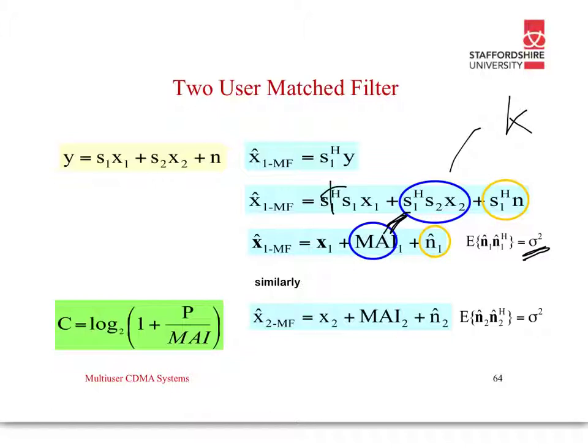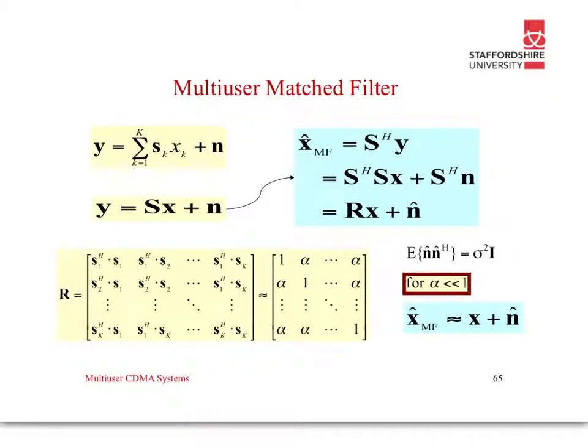Now, C, the capacity, is log 2 of 1 plus the power divided by the multiple access interference. We extend it to have multiple users. The users go from K equals 1 to large K. The output is the summation of user 1 to K times their own code SK, XK plus N.